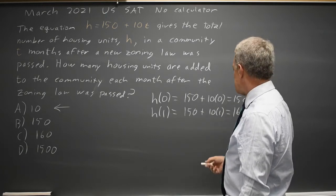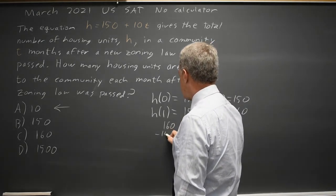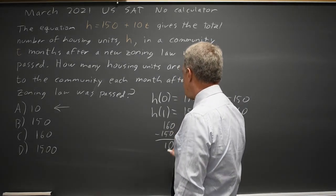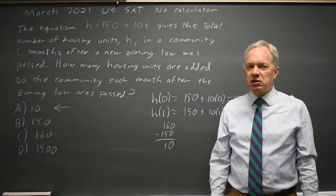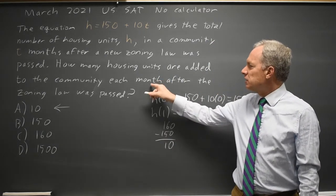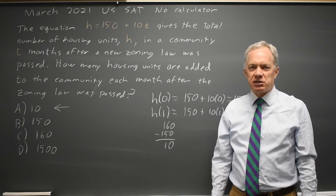So the difference is 160 minus 150 is 10 housing units added in the first month, and they're asking how many housing units are added each month. That would be 10, choice A.